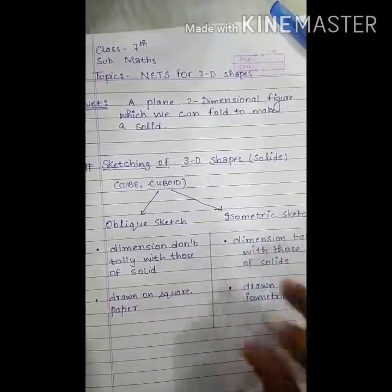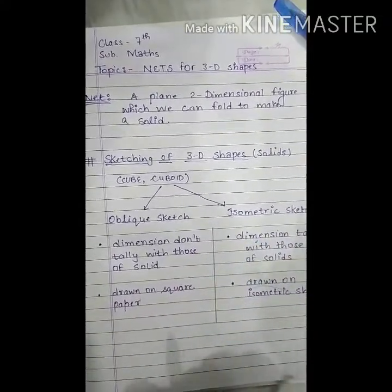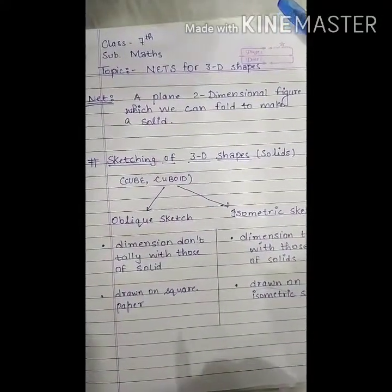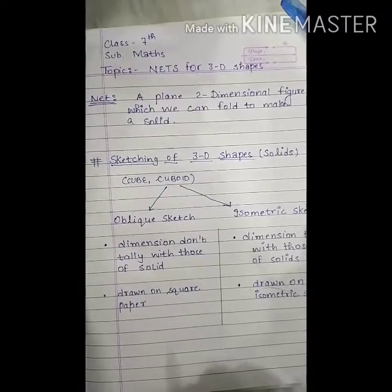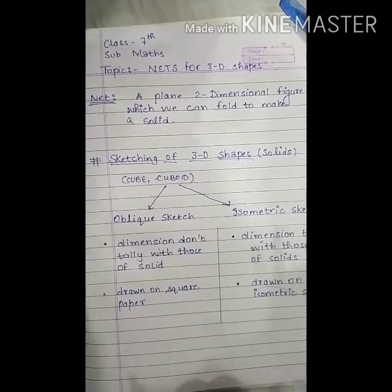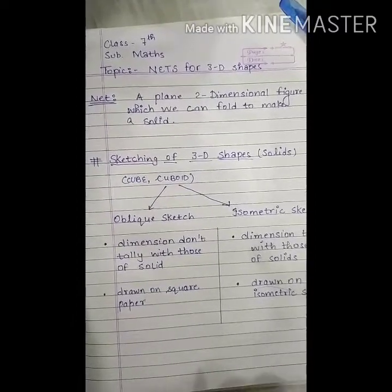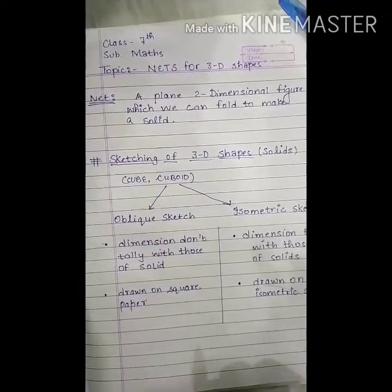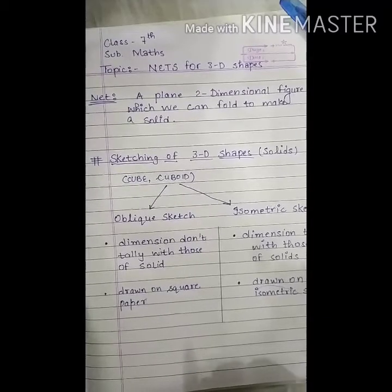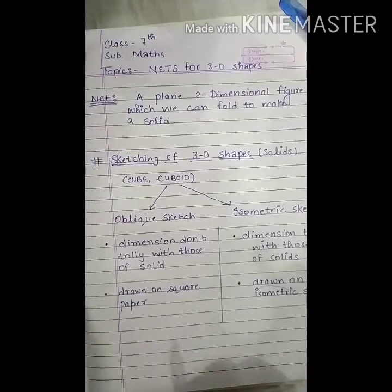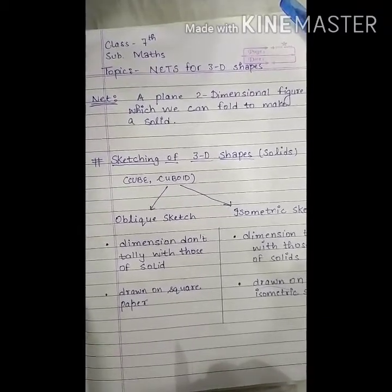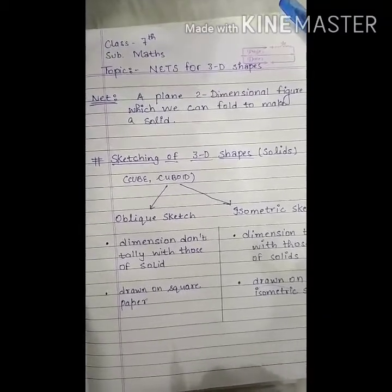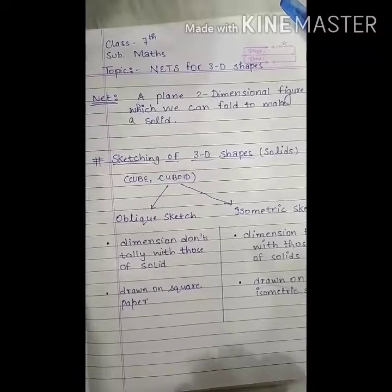کوئی بھی ایسی plane 2-dimensional figure جس کو ہم fold کر کے کسی solid shape میں convert کر سکتے ہیں، تو उस plane shape को हम क्या बोलेंगे? Net of the given solid.